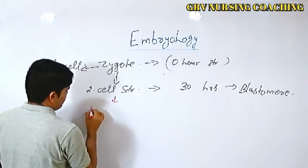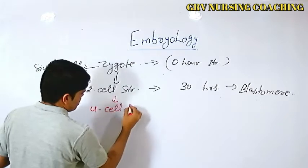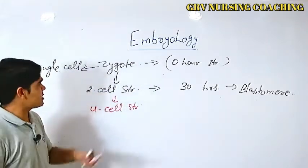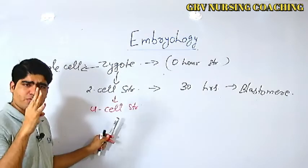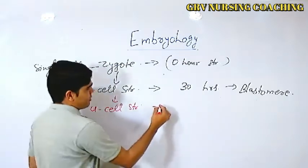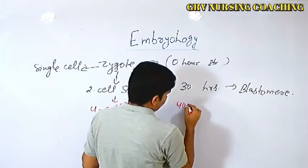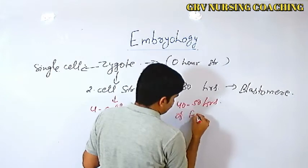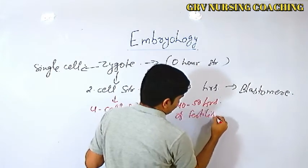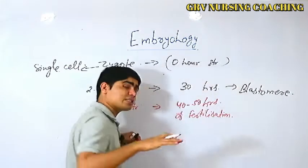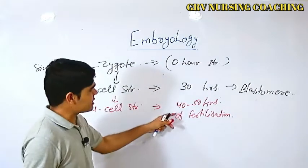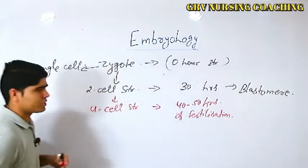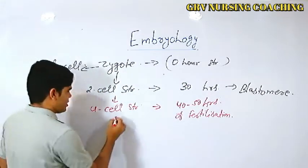After the two-cell stage, the next is the four-cell stage. This is the third phase of the zygote. Its formation occurs at 40 to 50 hours of fertilization. This four-cell stage has no particular specific name.